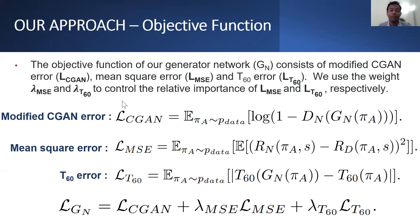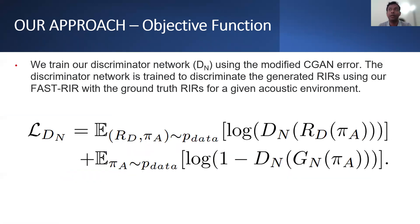The generator network is trained with a modified conditional GAN error to generate room impulse responses that are difficult for the discriminator network to differentiate from the ground truth. We compare each sample of the room impulse responses generated using fast RIR with those from the diffuse acoustic simulator for each vector embedding piA to calculate the mean square error. We calculate the reverberation time of each generated room impulse response against the reverberation time given as input in piA to calculate the reverberation time error. The discriminator network is trained using the modified conditional GAN error to discriminate generated room impulse responses from ground truth.